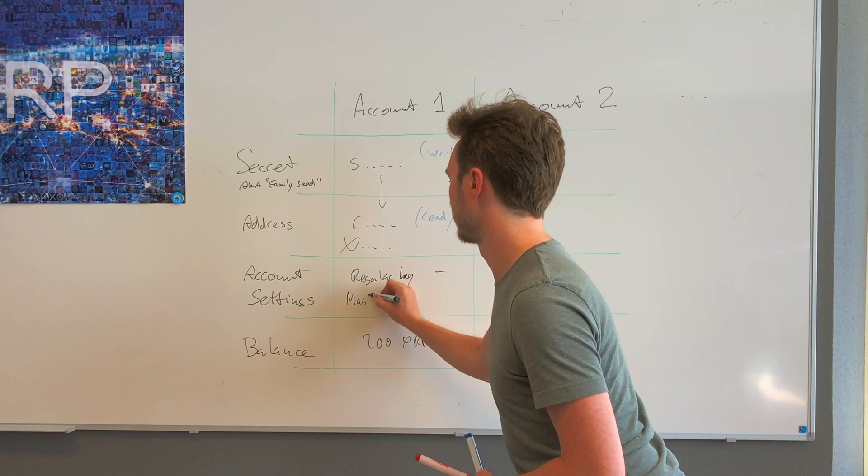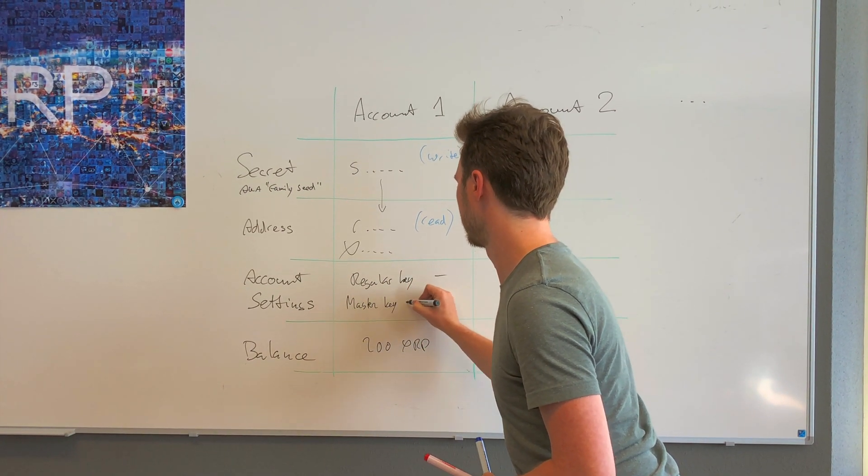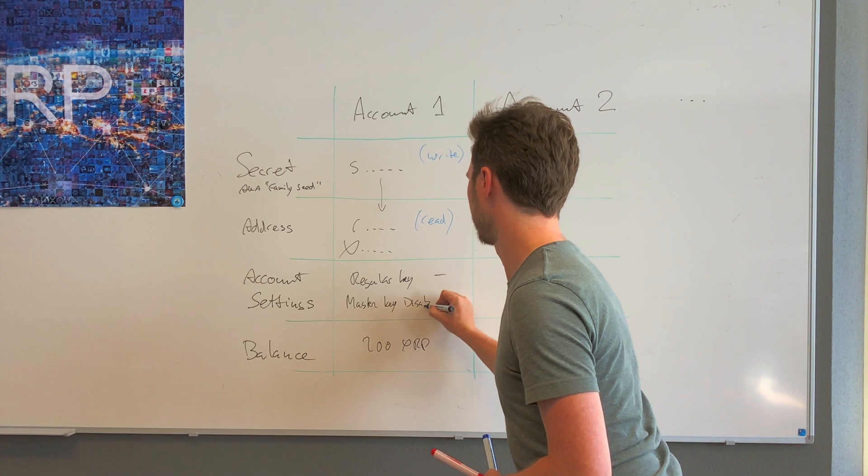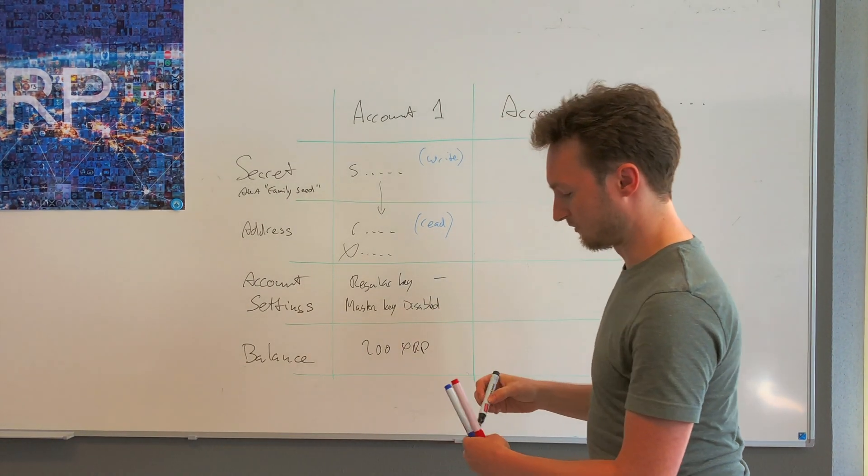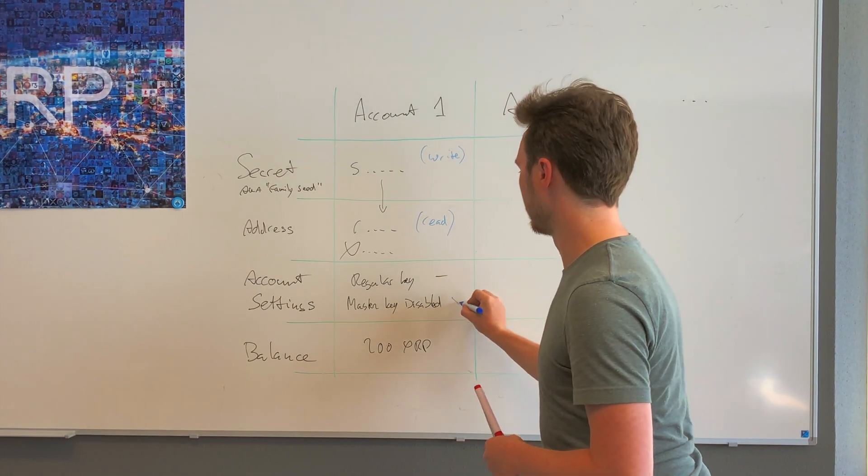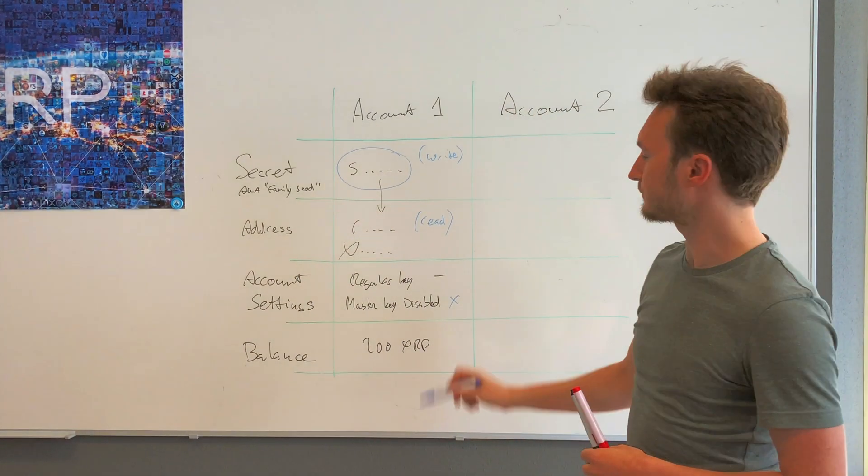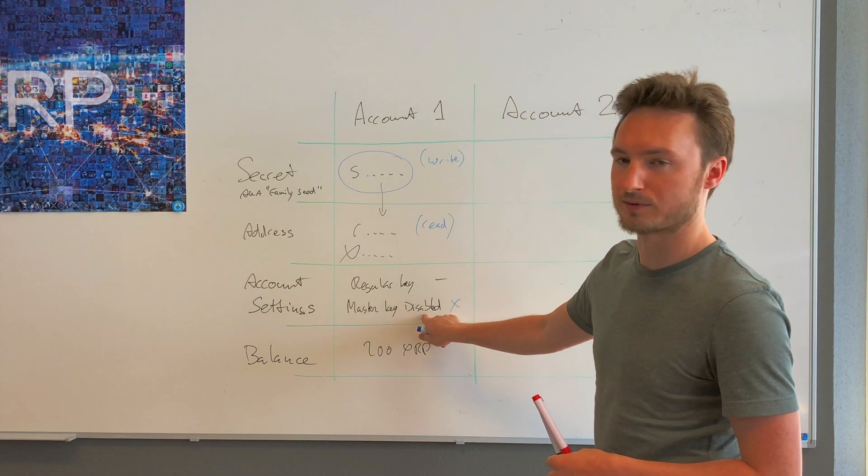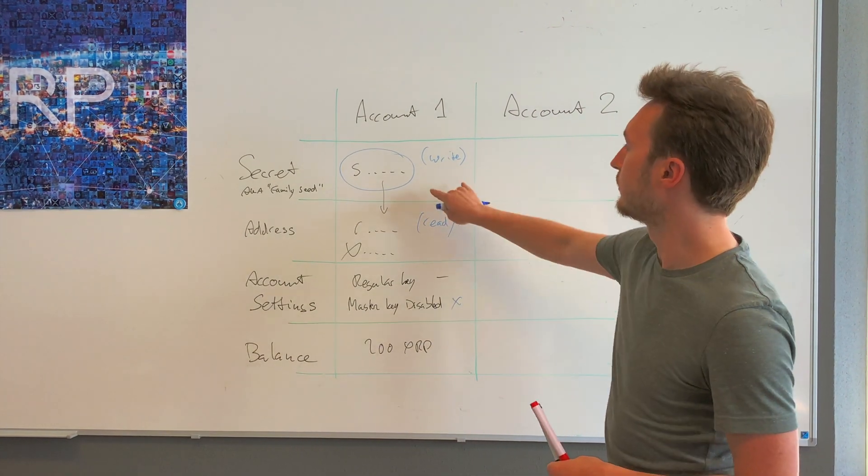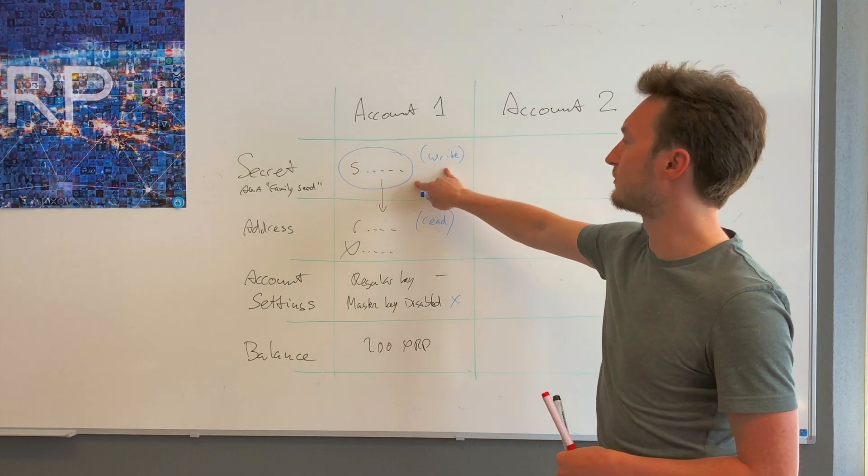The account settings contain a few flags, like whether the master key is disabled, yes or no. By default, the master key is not disabled, which is a good thing, because this is the master key. If you disable the master key for your account, you can no longer write transactions.